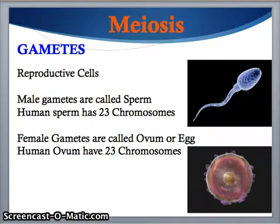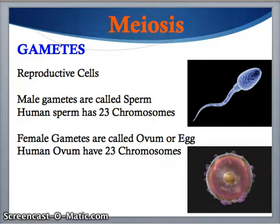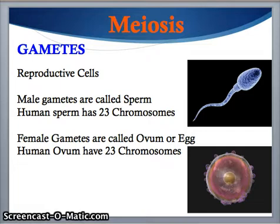Gametes are reproductive cells. The male gamete is called sperm, and the female gamete is an ovum, or egg. In humans, the sperm ends up with 23 chromosomes and the female egg ends up with 23 chromosomes. It is the combination of these two gametes — each with 23 chromosomes — that gives us the 46 chromosomes each human has.